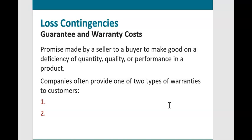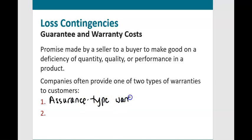Guarantees and warranties are promises made by the seller to the buyer to make good on a deficiency of quantity, quality, or performance in a product. Companies often provide one of two types of warranties — sometimes both: an assurance type warranty and a service type warranty.